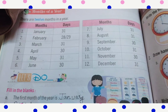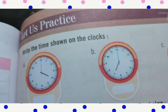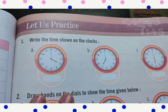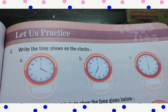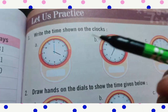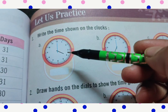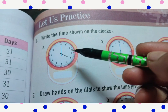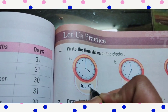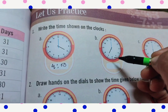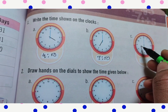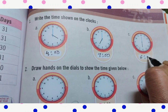Now we can solve the next page, page number 93. Question 1: Write the time shown on the clocks. The minute hand is on 12 and the hour hand is on 4, so the time is 4 o'clock. Next, the minute hand is on 12 and the hour hand is on 7, so the time is 7 o'clock. Next, the minute hand is on 12 and the hour hand is on 6, so write 6 o'clock.